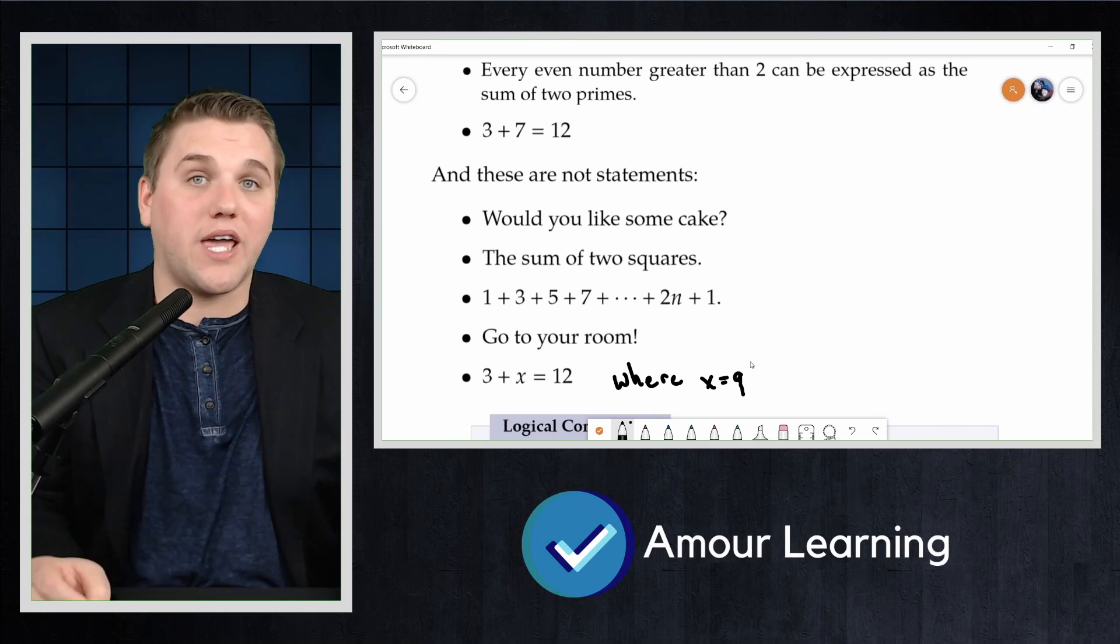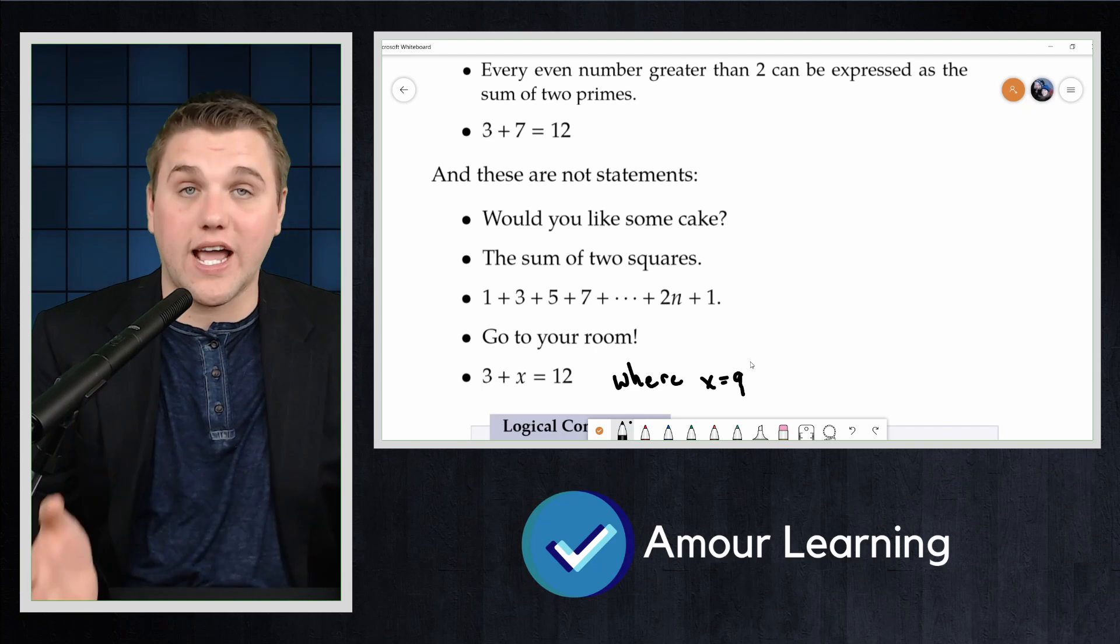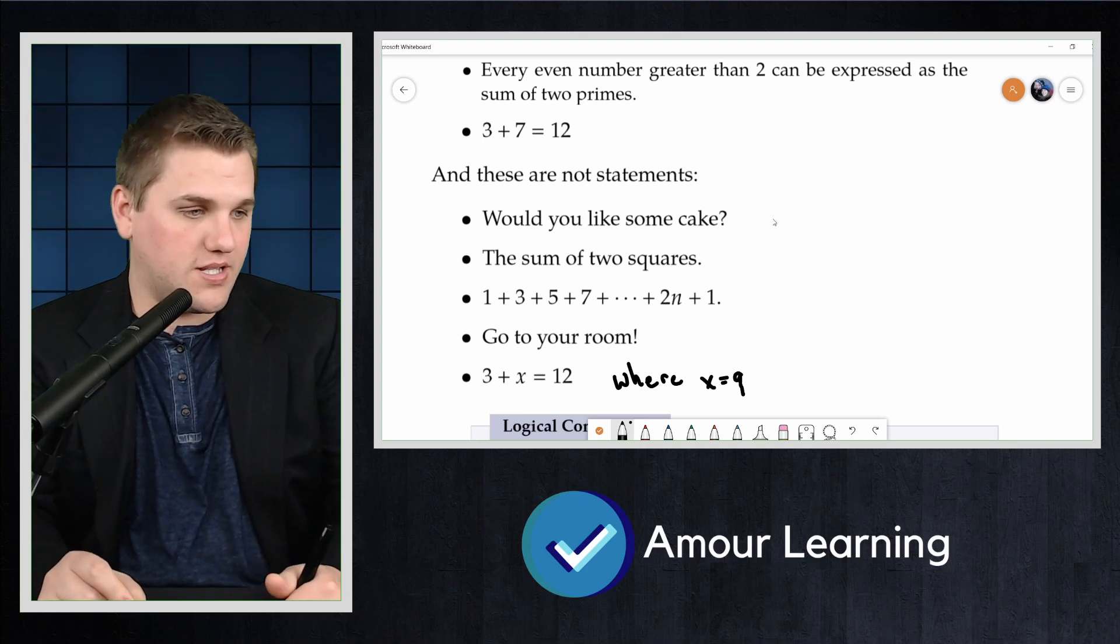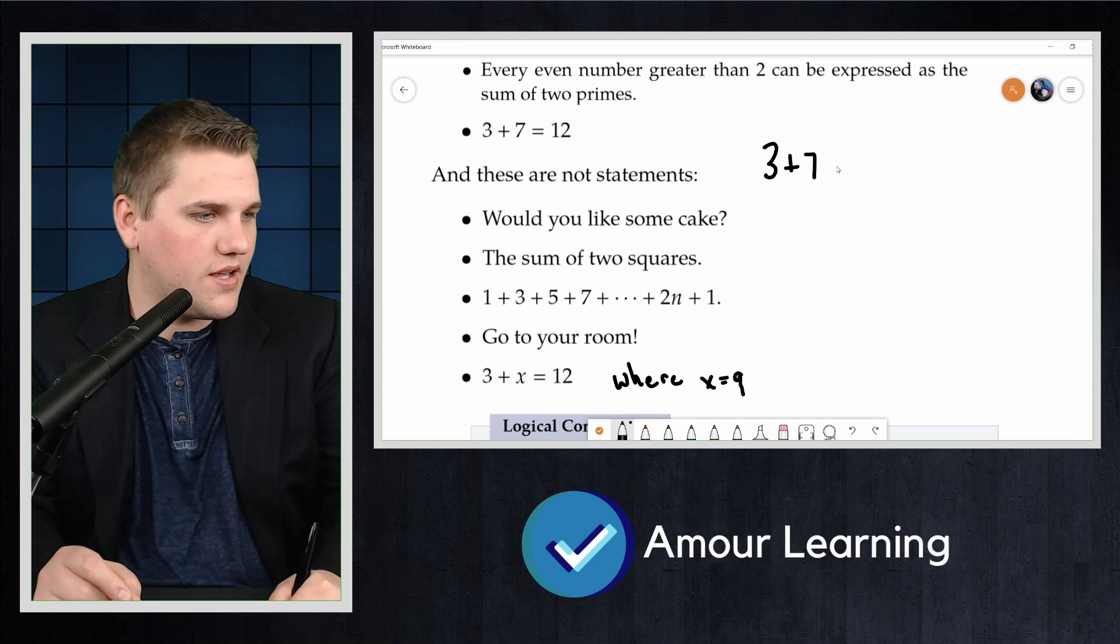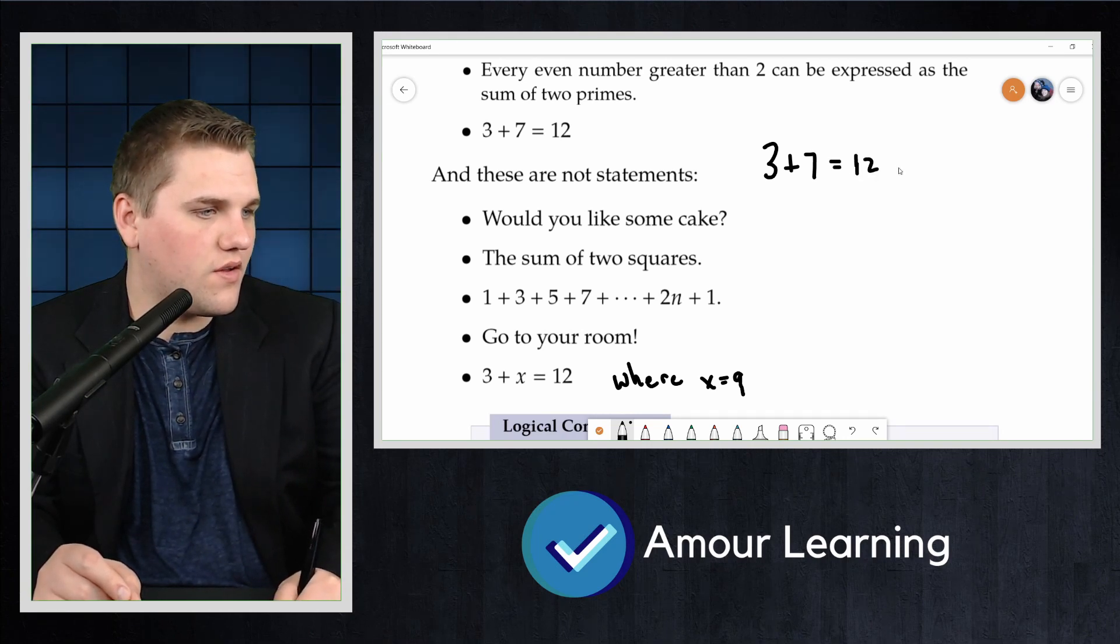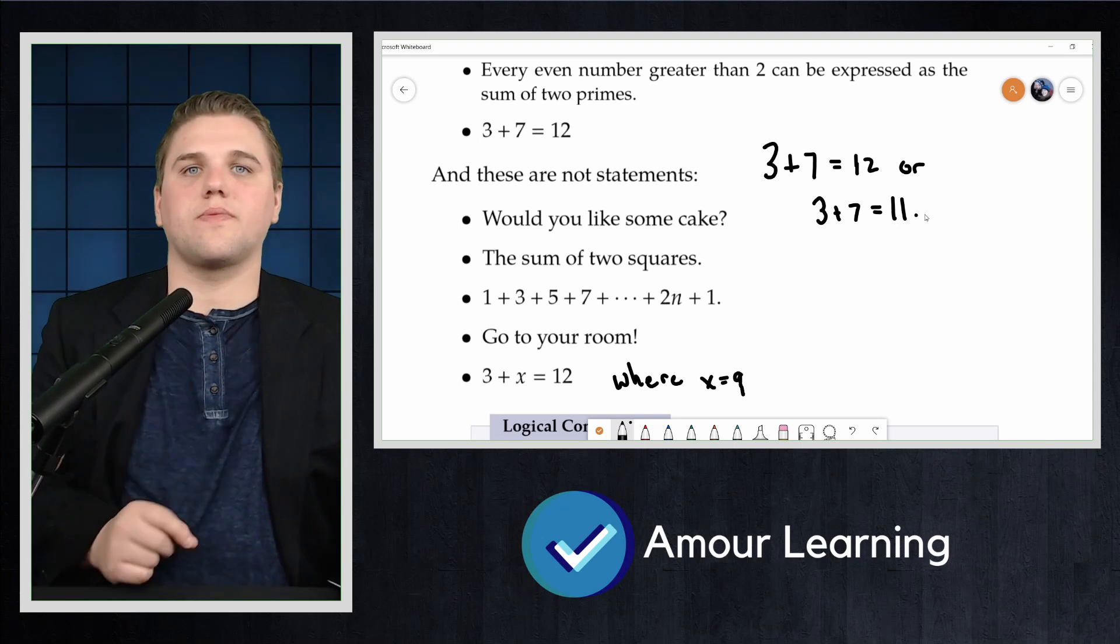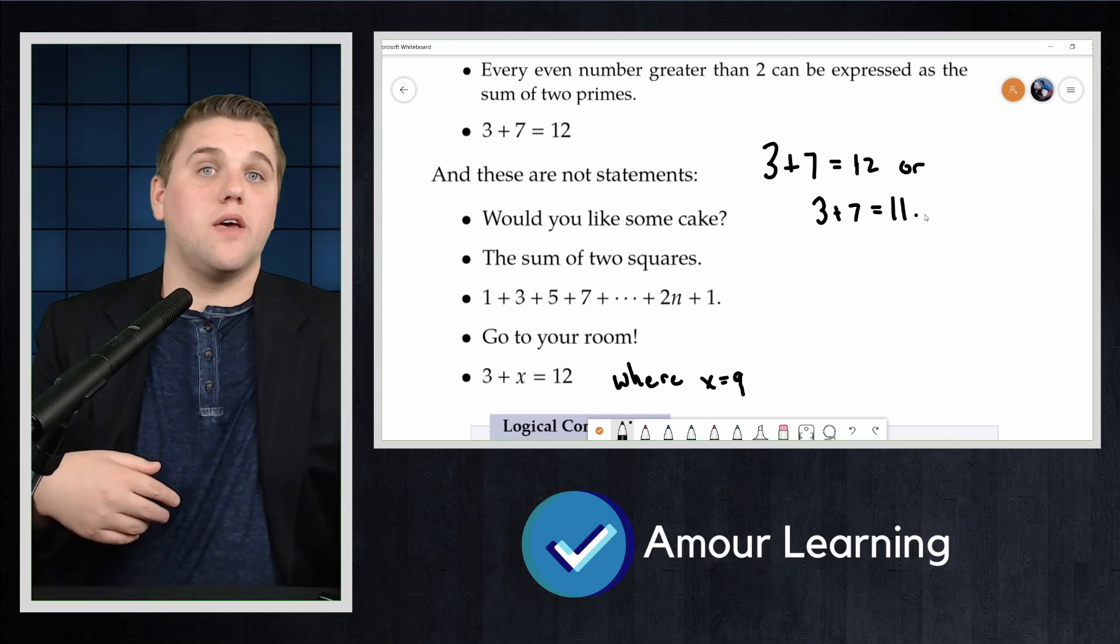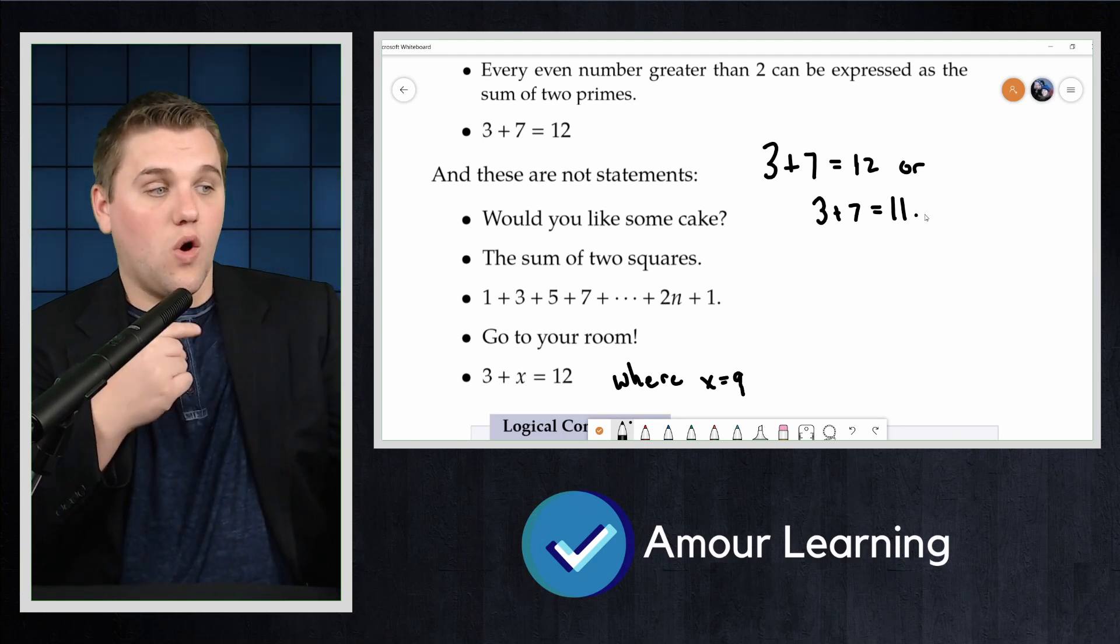You can build more complicated molecular statements out of simpler ones using logical connectives. For example, this is a molecular statement: 3 plus 7 equals 12 or 3 plus 7 equals 11. Note that we can break this down into two smaller statements. The two shorter statements are connected by this OR here.